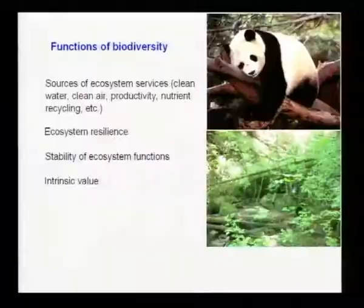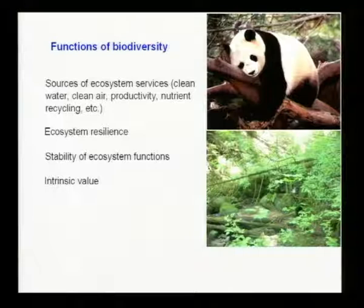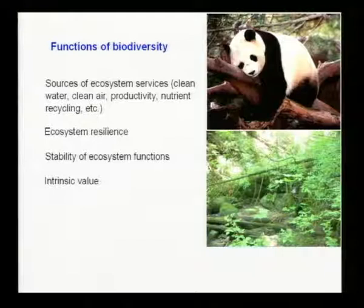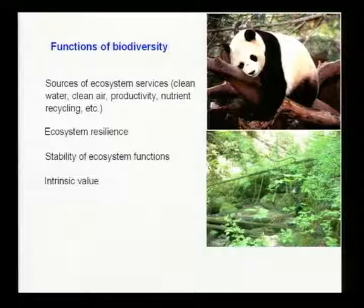When we talk about ecosystem functions, there are a number of kinds. First, species provide ecosystem services — a term now very common in the literature. Some species clean the water by collecting particles or taking up nutrients; they provide clean water, clean air in some cases, and nutrient recycling. Lots of plants, bacteria, and fungi are involved in nutrient recycling. Without them, we would have dead plant matter building up through time, but those nutrients and that energy are recycled through the system because of these species.